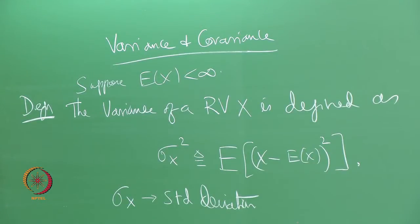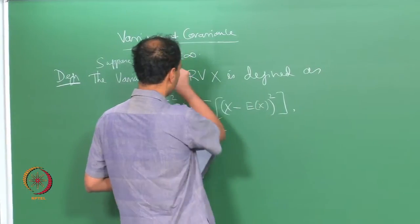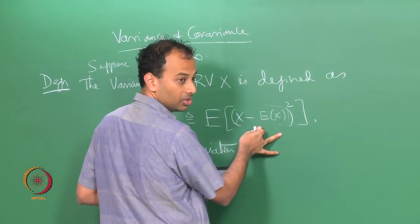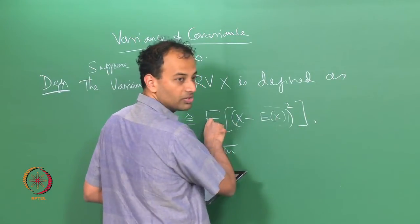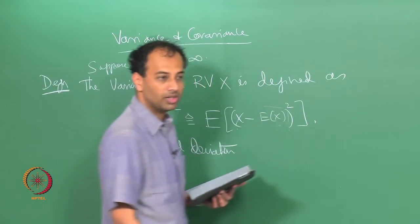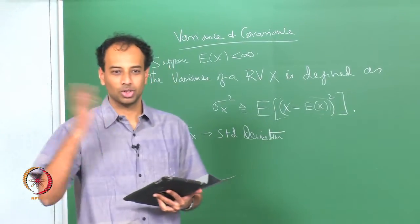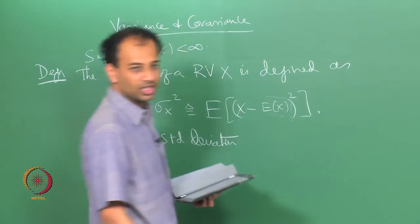Standard deviation is used more in statistics and variance is used more in probability. Since x minus E[x] is just a constant subtracted from x, the quantity (x - E[x])² is a non-negative random variable, so its expectation is always well defined. Variance is always well defined as long as E[x] is finite — it might be infinity, but there is no issue of indeterminate form.